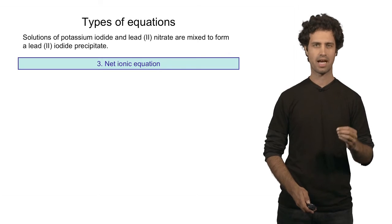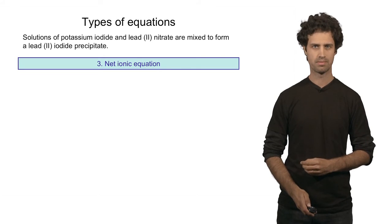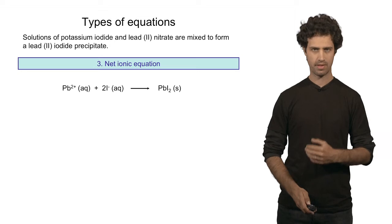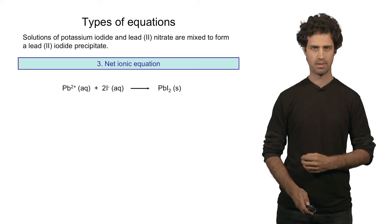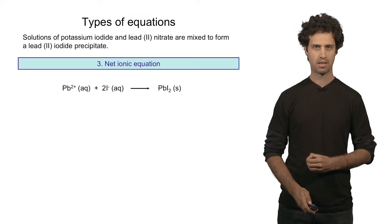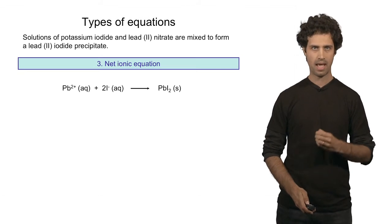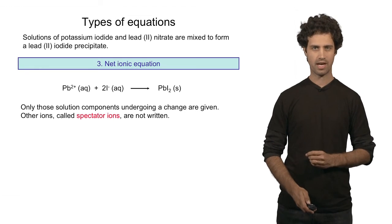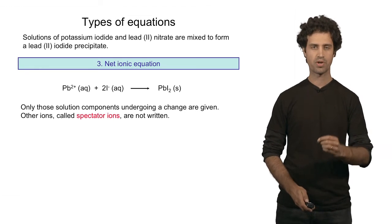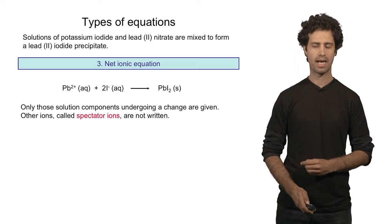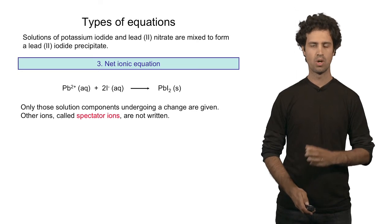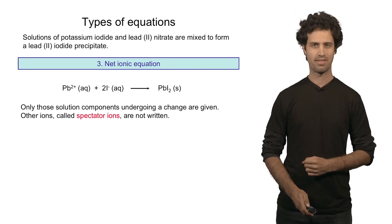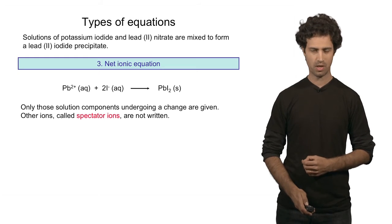That is called the net ionic equation. Only the interacting ions are indicated — the lead cation and the iodide anion. These are the interacting ions that form the product, which is lead 2 iodide. All the spectator ions are not shown in this way of writing down the chemical equation.